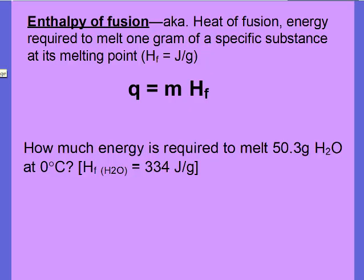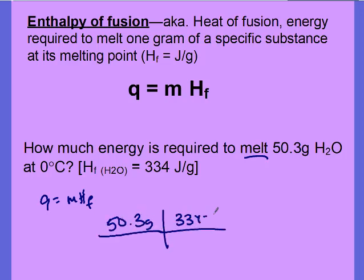Enthalpy of fusion or heat of fusion is the energy required to melt one gram of a substance at its melting point. And our equation is Q equals M times HF. So, here we're melting. We're not changing any temperatures. We're not rearranging our equations, so we have our mass and then our HF. So, we just need to multiply those. And then we needed three sig figs, so 16,800 joules.